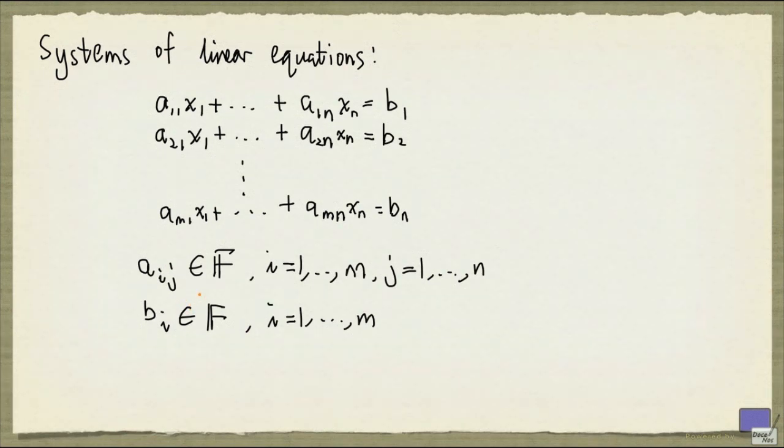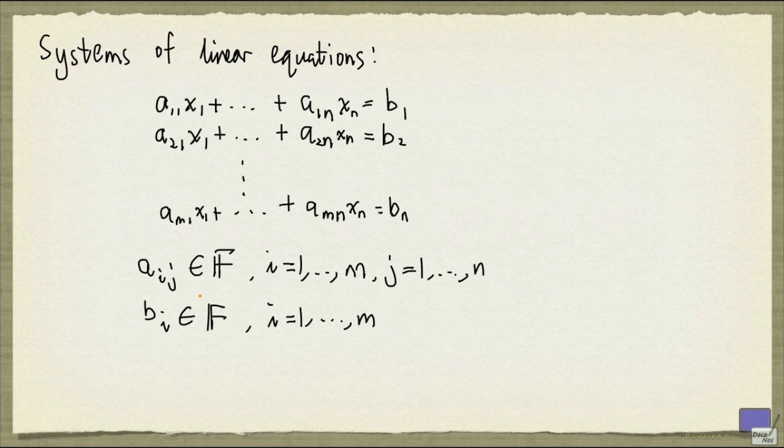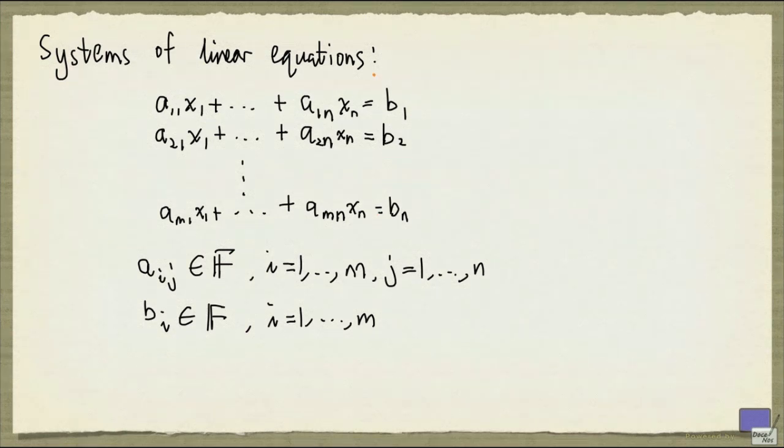But they could be taken from some other structure where addition and multiplication are defined. What we want to do is find values from f that could be assigned to x1 up to xn so that all these equations are simultaneously satisfied.